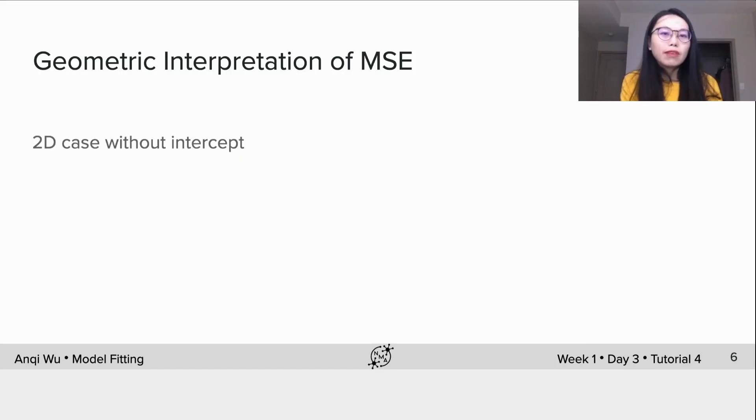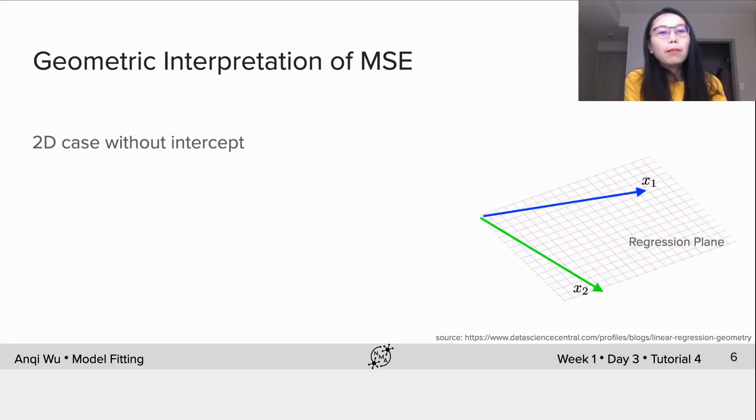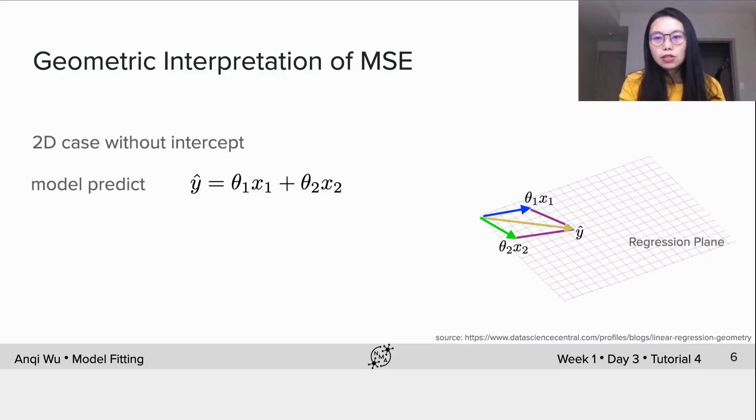But we can provide some geometric interpretation of multiple linear model with a 2D example. Again, for simplicity, the 2D case doesn't have the intercept. We first plot x1, x2 on this regression plane. The model predict is y hat, which is a linear combination of theta1, x1 and theta2, x2, on the same regression plane. Now we could plot the y we want to regress to, which is off the plane, and the residual e is the vector pointing from y to y hat.